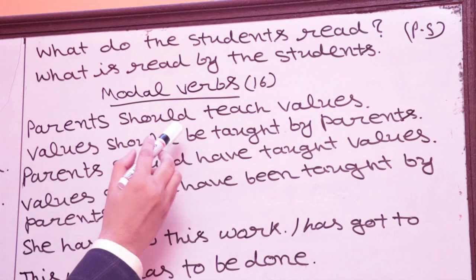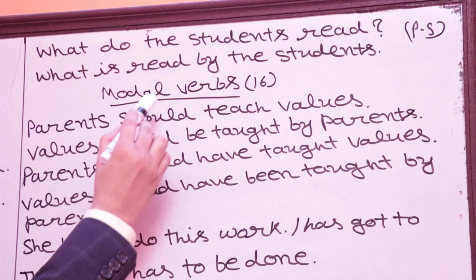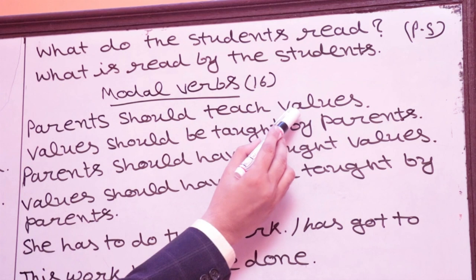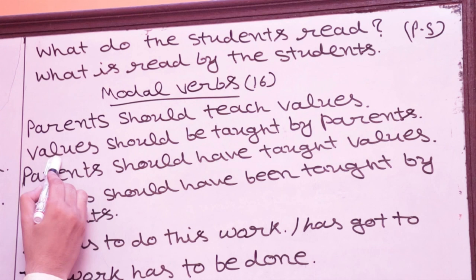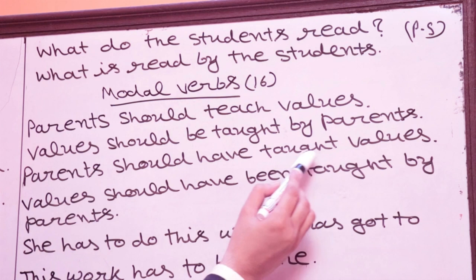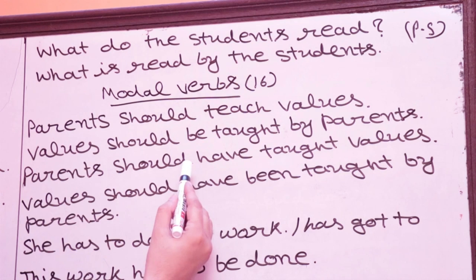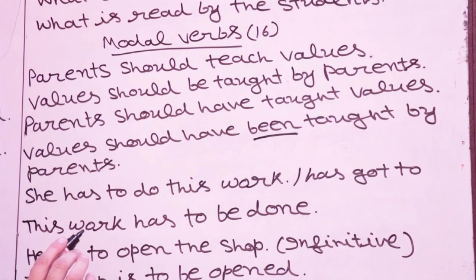For modal verbs — I taught you 16 modal verbs. Rule: modal + be + third form. 'Parents should teach values' → 'Values should be taught by parents.' Past tense of modal: 'Parents should have taught values' → 'Values should have been taught by parents.' The meaning is the same in both cases.